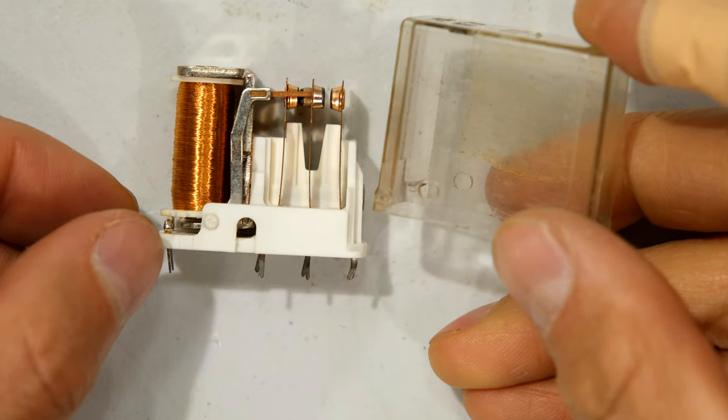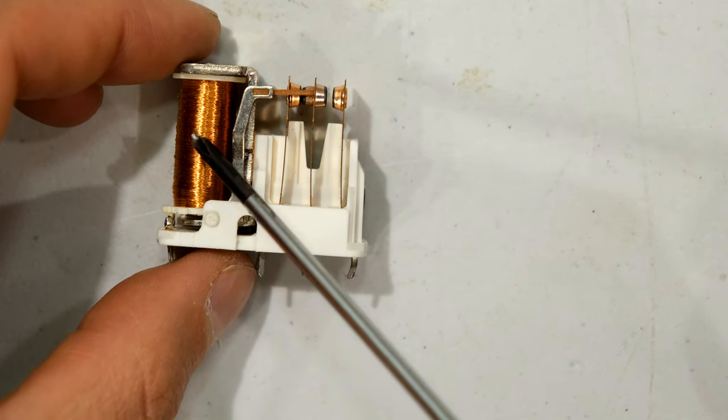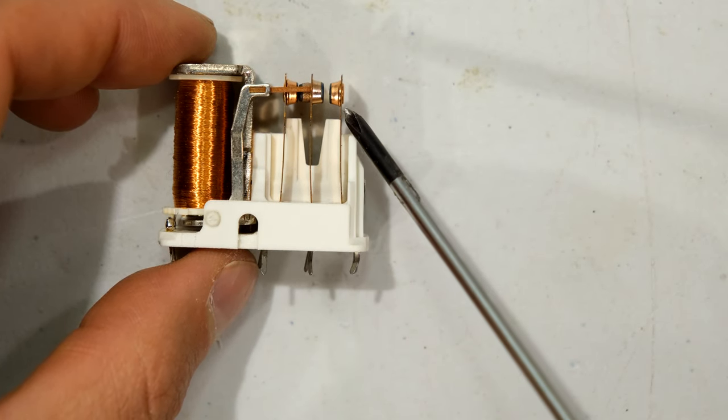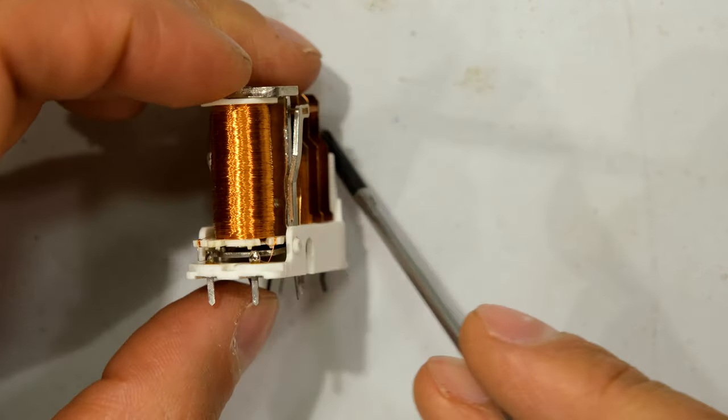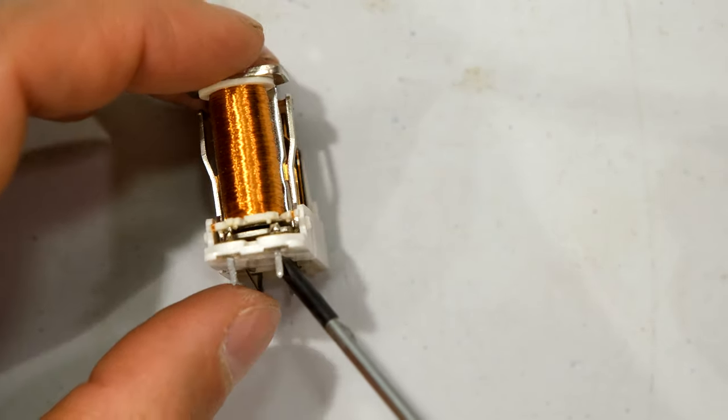Right, over here I've removed the cover of this relay and on the inside you can see there is a winding on this side and then there are some contacts on the other side. Now what happens here, we can see we've got two terminals here. These terminals are connected to a supply.